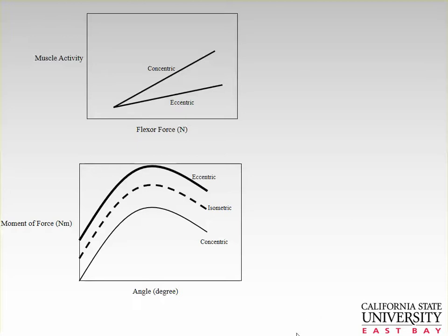Let's pick up on concentric and eccentric contractions. Here are two graphs that illustrate that eccentric contractions generate more force — or more torque — than concentric contractions. Isometric is in the middle. Here's the moment of force or torque versus angle diagram: eccentric is the highest, followed by isometric, followed by concentric. We are weakest during our concentric contractions.